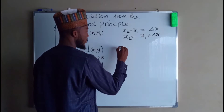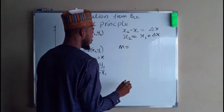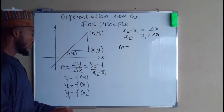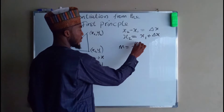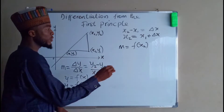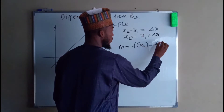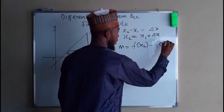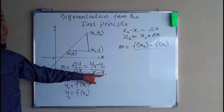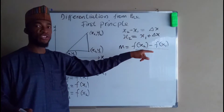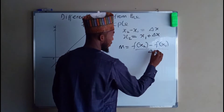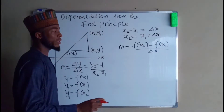We have our slope M, which is equal to y2 — which is a function of x2 — minus y1, which is also a function of x1, divided by x2 minus x1. And you know that x2 minus x1 is nothing but the change along the x axis, so we have delta x.